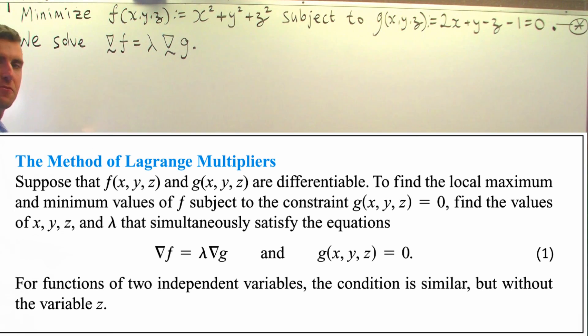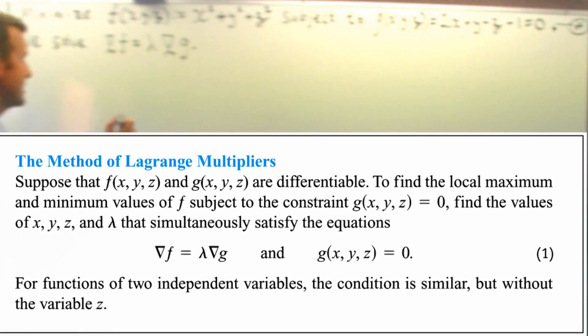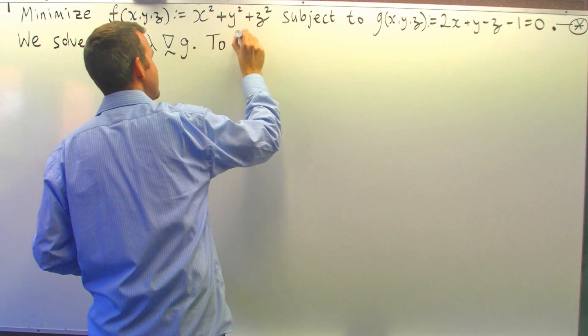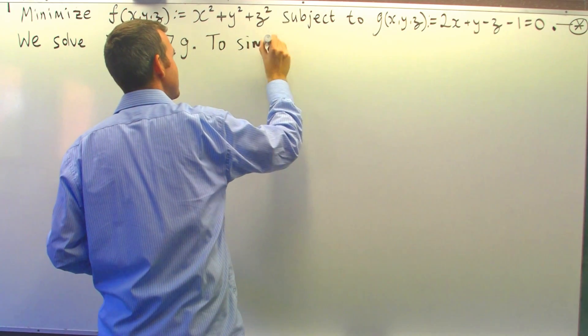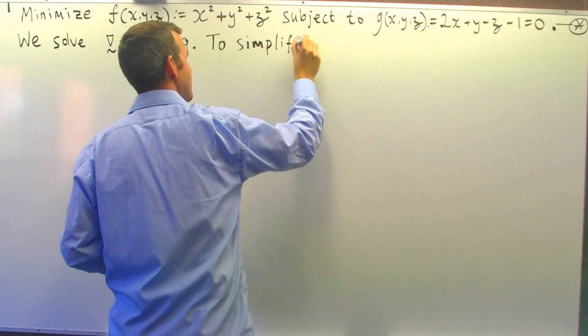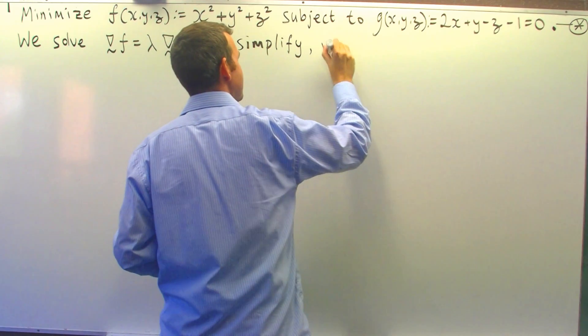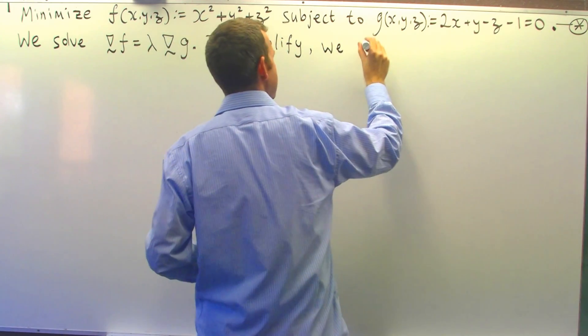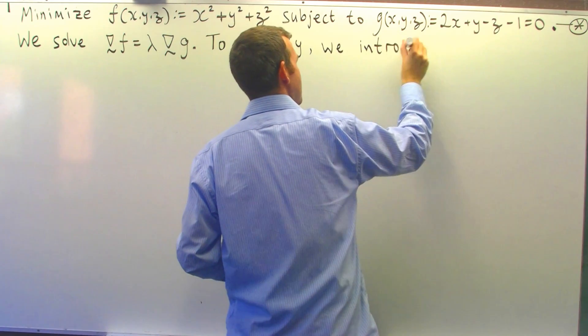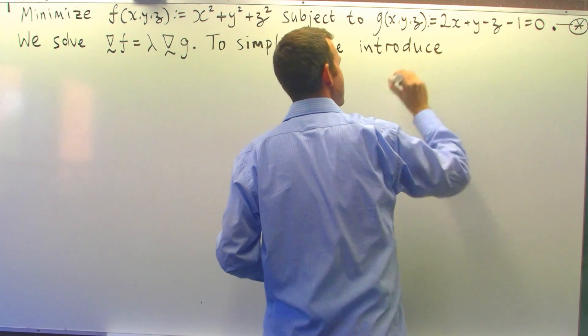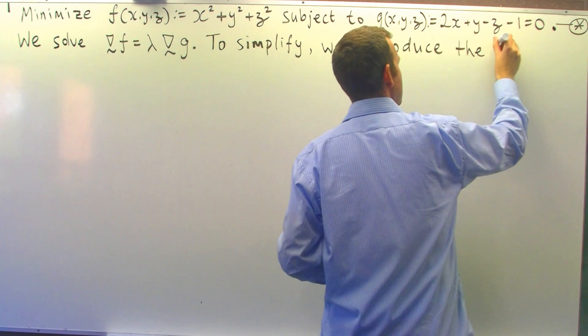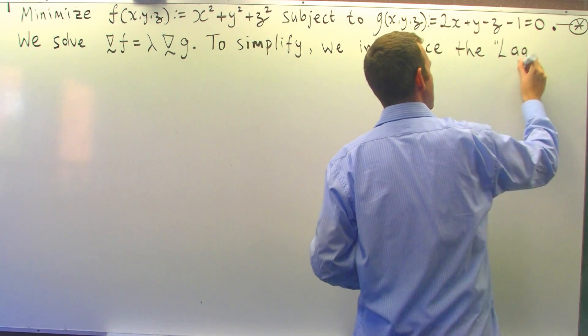Essentially what we're doing, we're looking to solve this for points x, y, z that satisfy this equation for some non-zero lambda. Now that's a lot of information. So to simplify the calculations, I'm going to introduce a function known as the Lagrangian function.